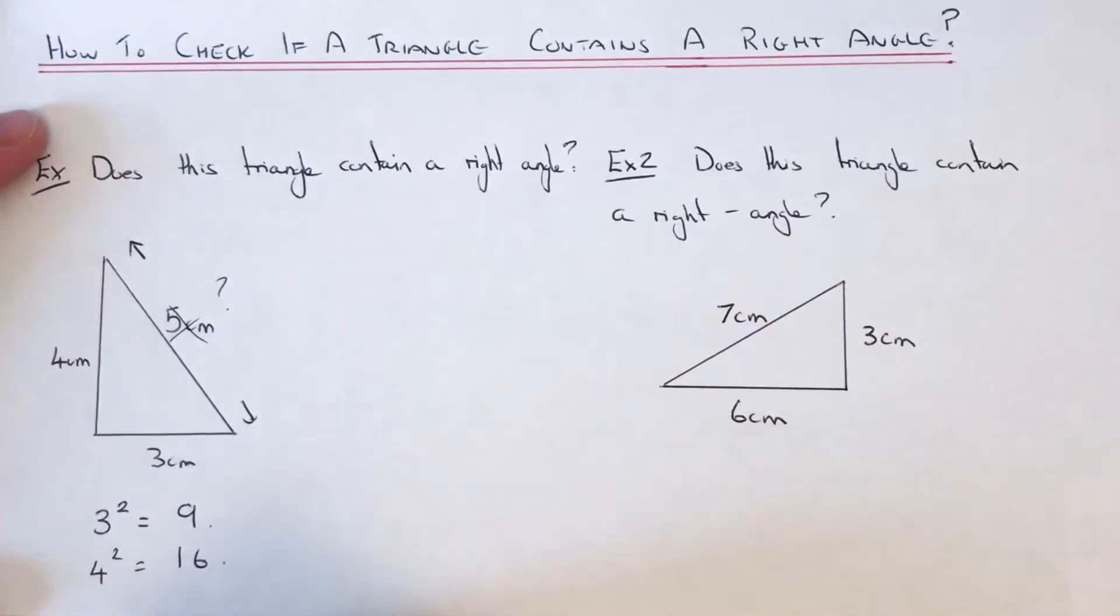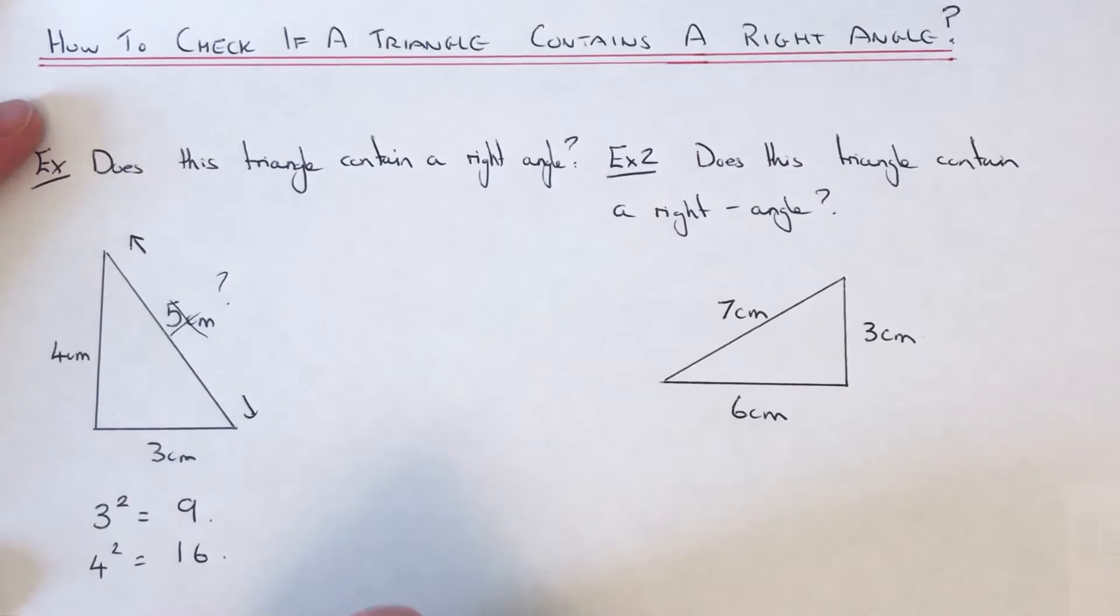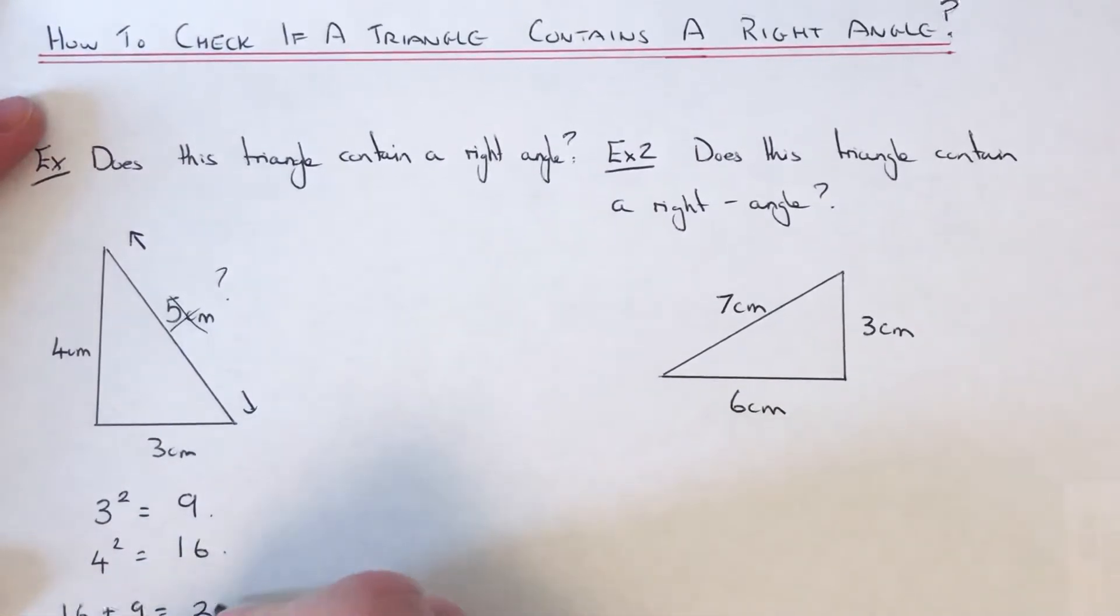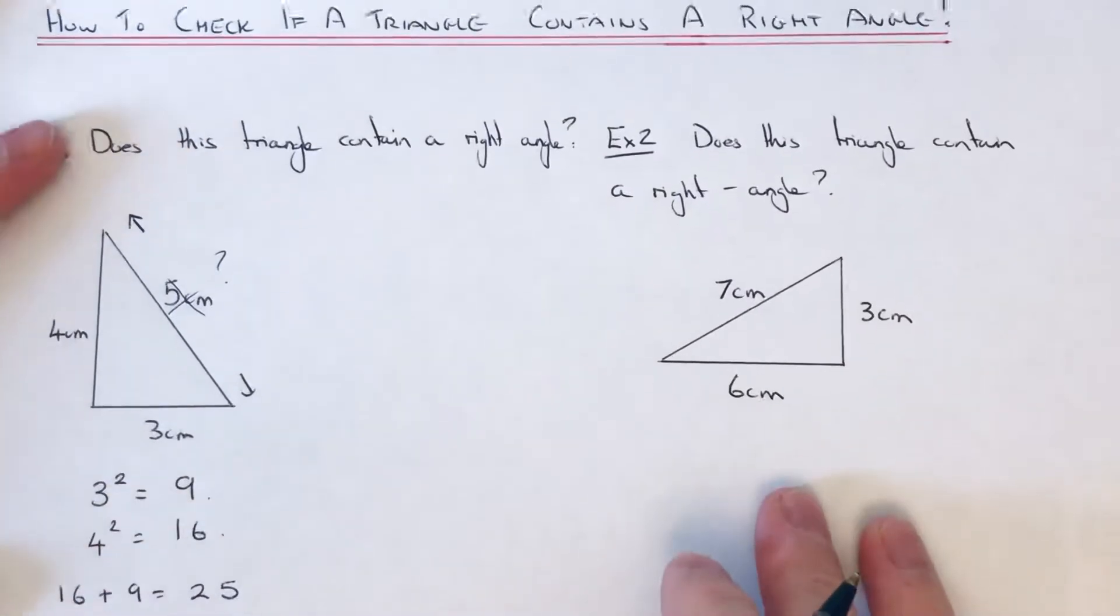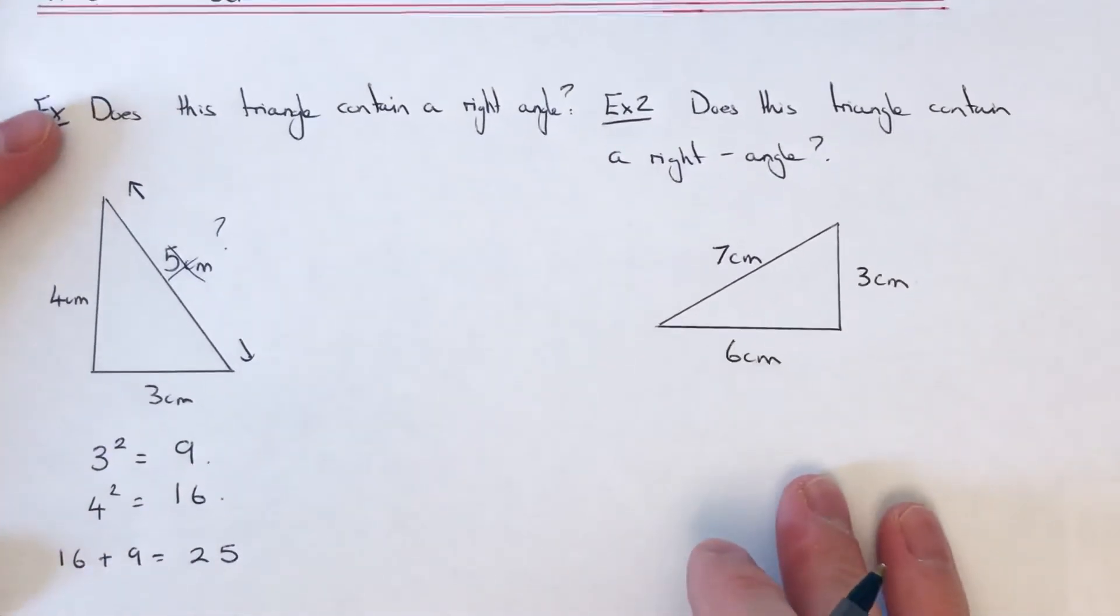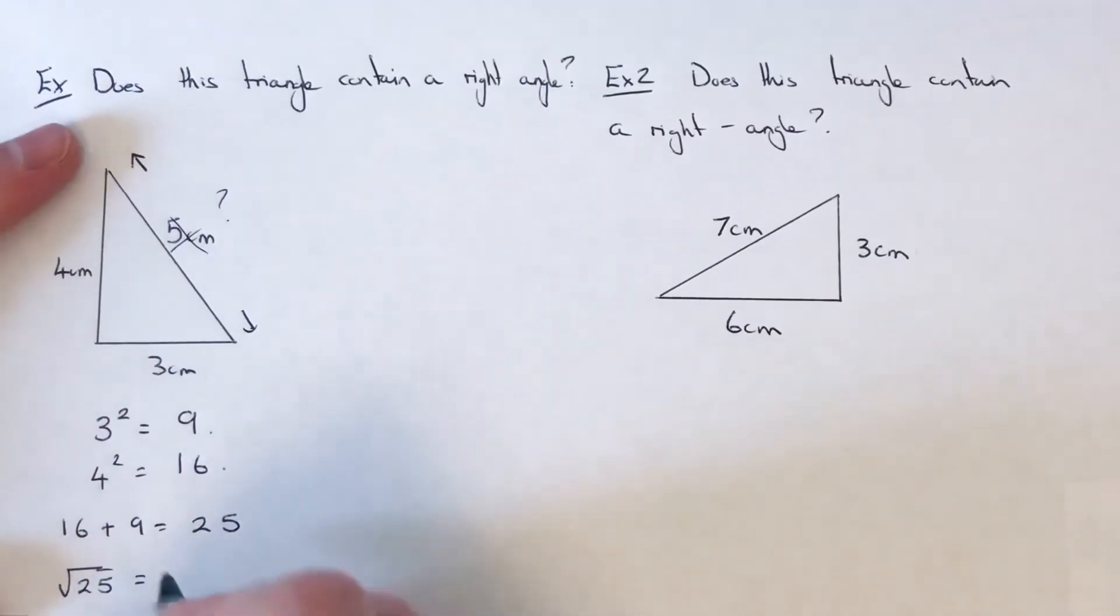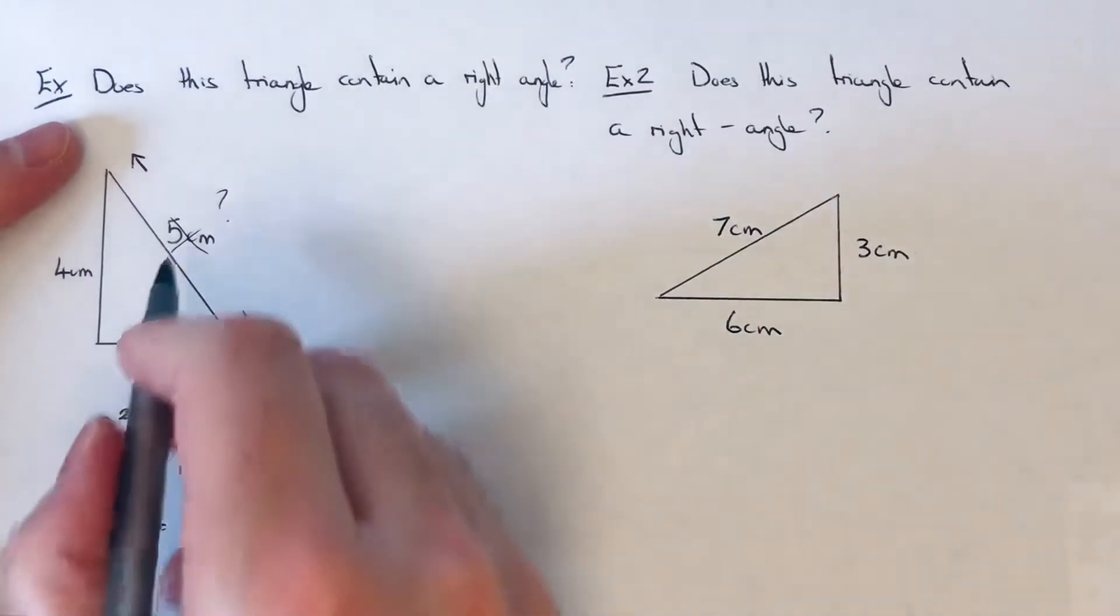We're working out the longest side, so we're going to add these squares together. So 16 add 9 is 25, and then our final step is to square root 25. So square root of 25 is 5.